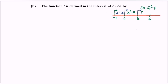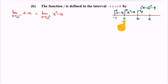To find a, we focus on x = 2. Since f is continuous, the limit as x approaches 2 from the left using (2 minus x) must equal the limit from the right using (x squared minus a). Substituting x = 2, we get 0 equals 4 minus a, so a equals 4.